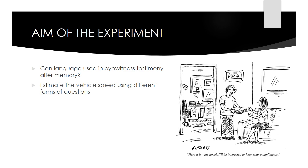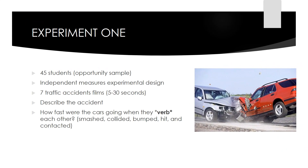Estimating vehicle speed is something people are generally poor at, and so they may be more open to suggestion. For their first experiment, they recruited 45 students, which formed an opportunity sample. This was a laboratory experiment with five conditions, only one of which was experienced by each participant — an independent measures experimental design. Seven films of traffic accidents, ranging in duration from 5 to 30 seconds, were presented in a random order to each group.